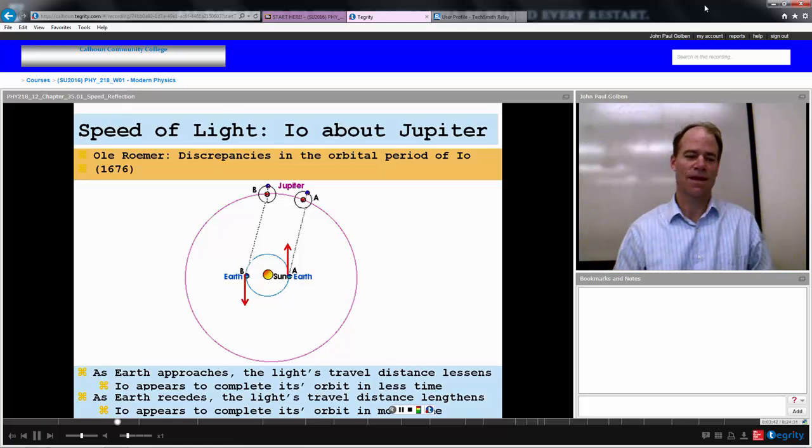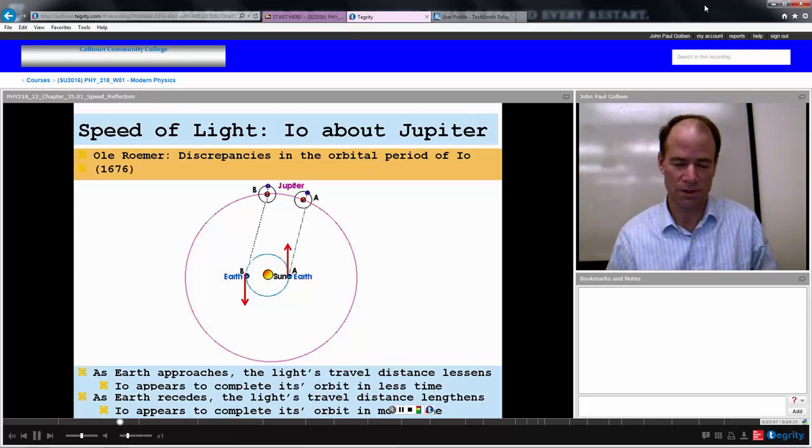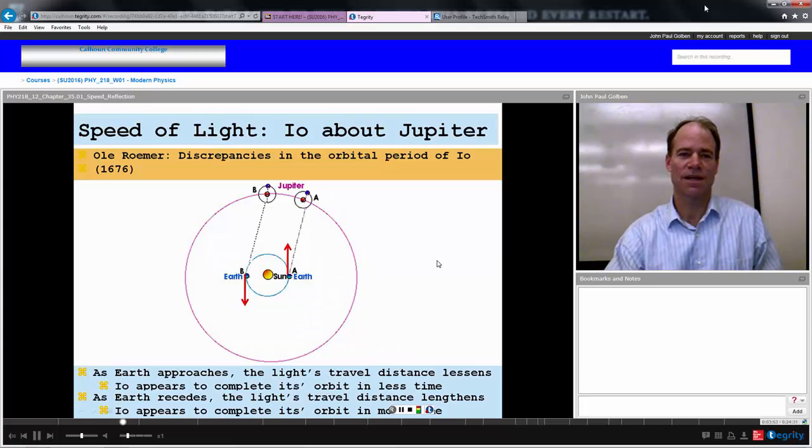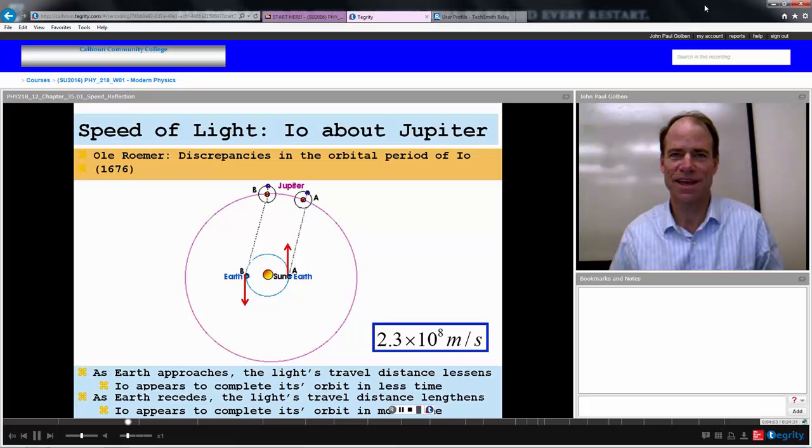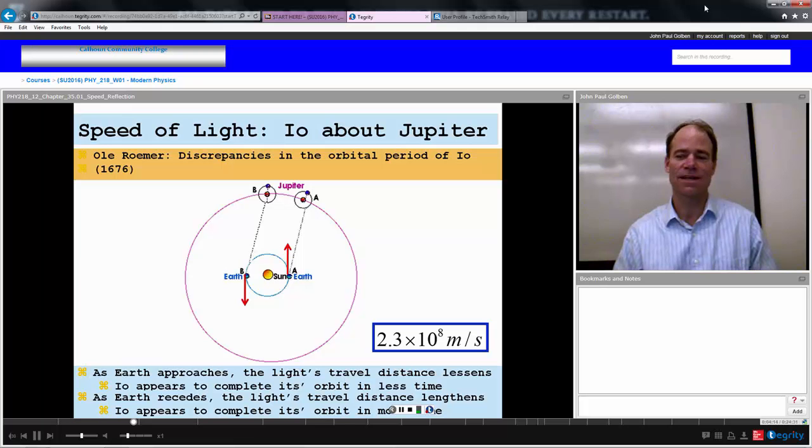And if you use some good geometry and some good calculations, you could actually come up with the speed of light with this information. And that's what Ole Rømer did in 1676. And Rømer came up with the speed of light of 2.3 times 10 to the 8 meters per second. Really, not bad. This is really the very first good measurement of the speed of light. It's on the order of the speed of light that we know of today, and an excellent, brilliant idea based on the measurement of the Moon going around Jupiter.